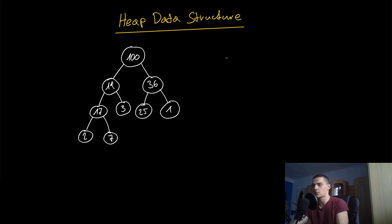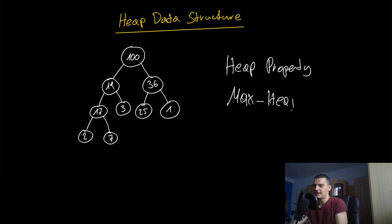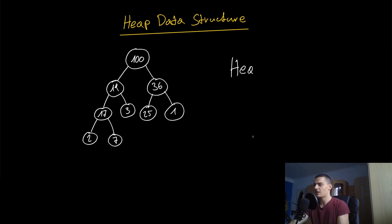This binary tree is special because it fulfills the so-called heap property. The heap property depends on what kind of heap we're looking at. In this case we're looking at a max heap, which means every child has to be smaller than its parent. So 17 is larger than 2 and 7; 19 is larger than 17 and 3; 100 is larger than 19 and 36; and 36 is larger than 25 and 1. The max heap property is fulfilled.